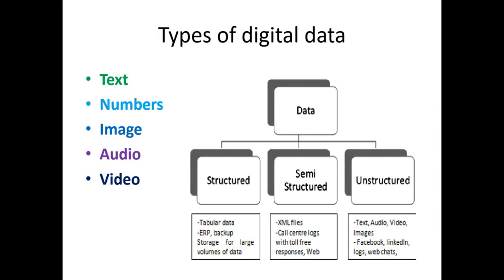Unstructured data is where data is not organized properly at all. A Word document without an index, audio files, video, images, and social media data from Facebook or LinkedIn are all unstructured by default. The image data we will now deal with is unstructured because there are no rows and columns — there is no organized way of storing it like a CSV file.